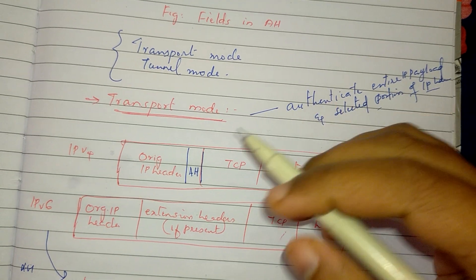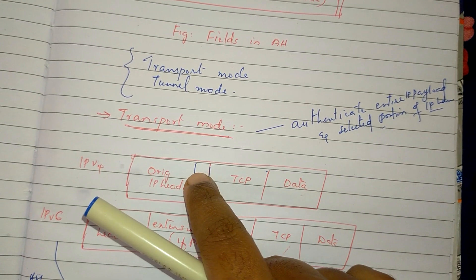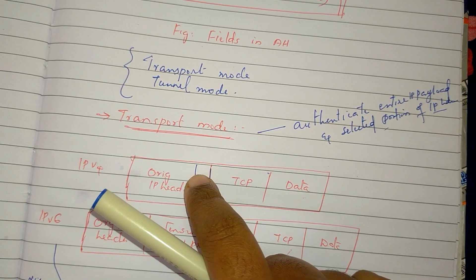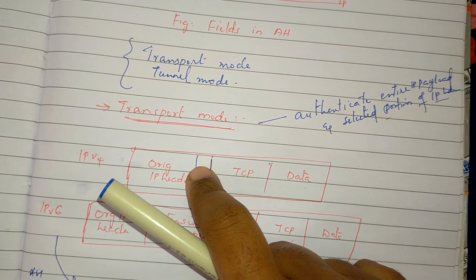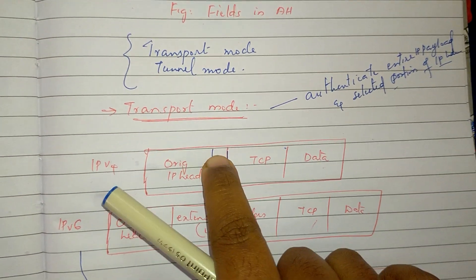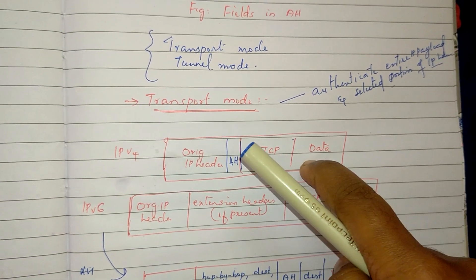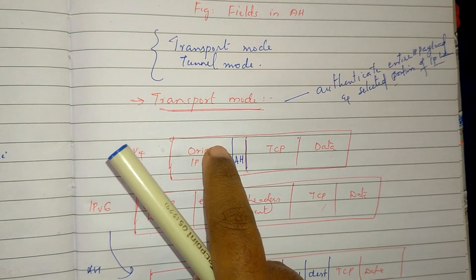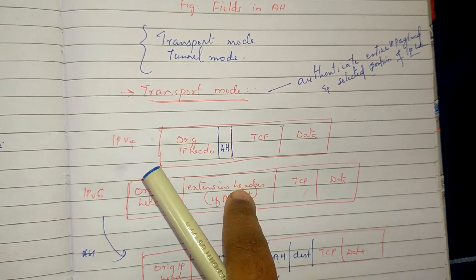Without the authentication header: original header, then TCP, then data. With AH, the original IP header source and destination address are indicated in the mutable header fields, then TCP segment, then data. IPv6 also has an extension header — it will add a header.